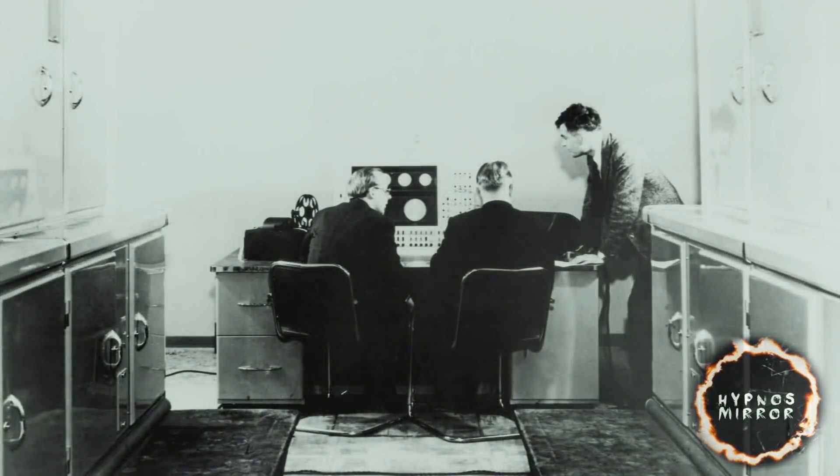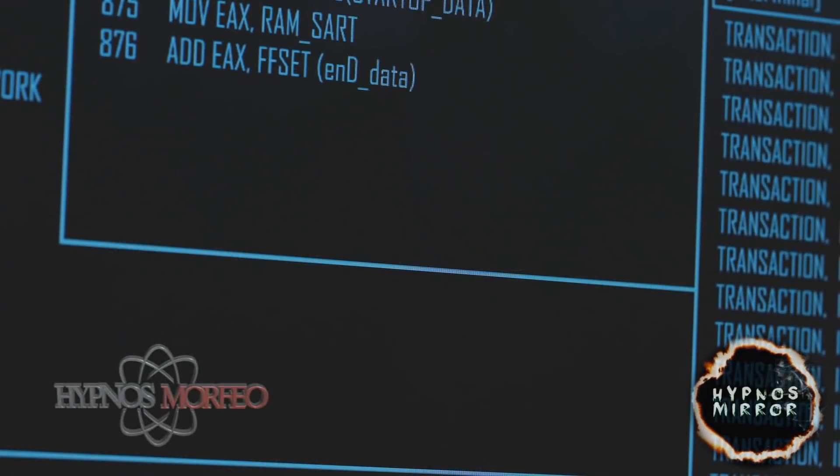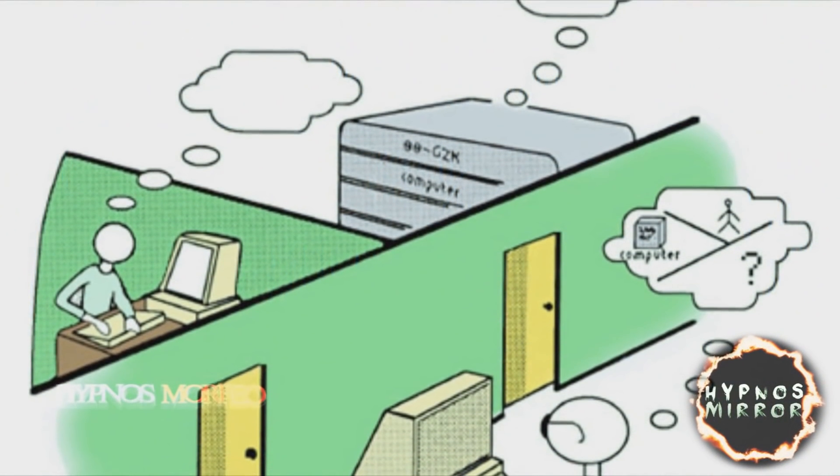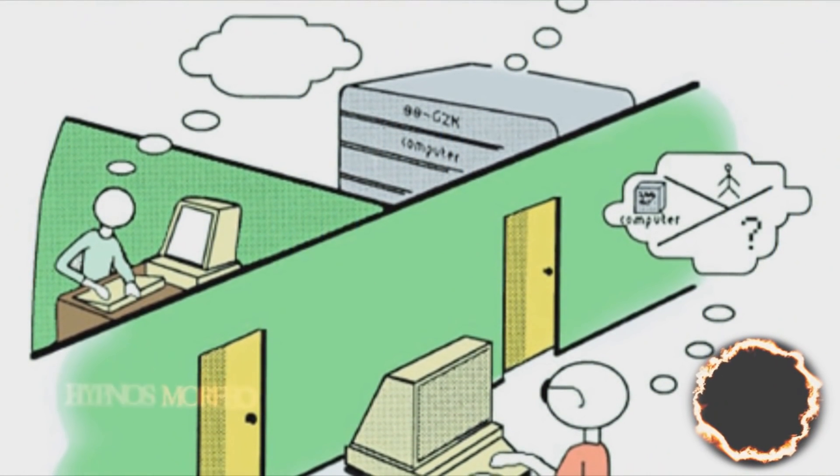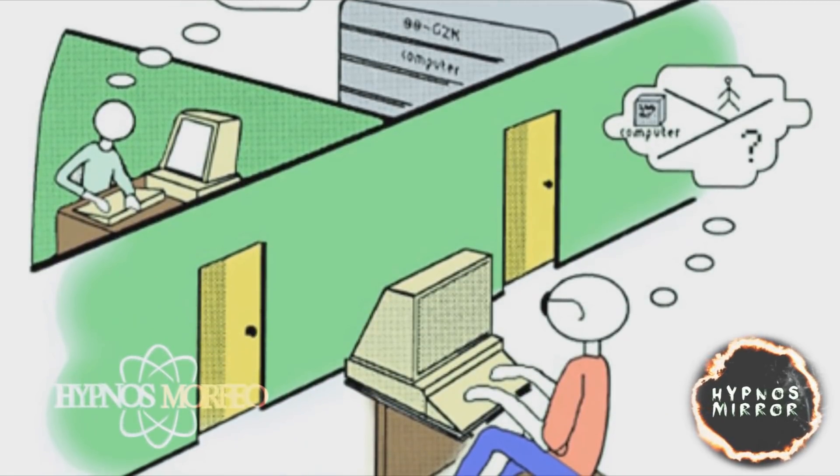Alan proposed an idea that would test if a machine could really emulate human consciousness. He created a method in which a conversation would occur between three participants. One of these participants could not see the face of the other two. They could only communicate through writing.